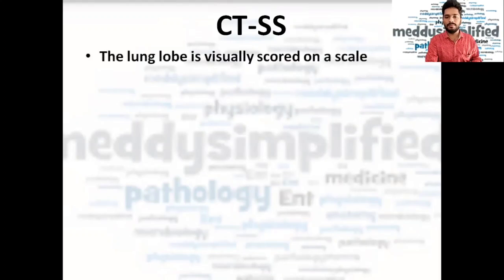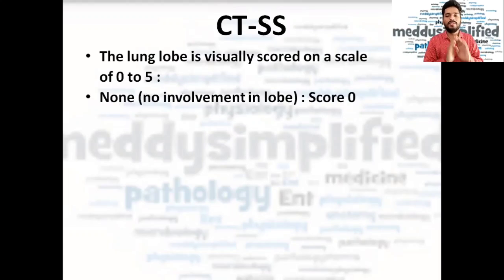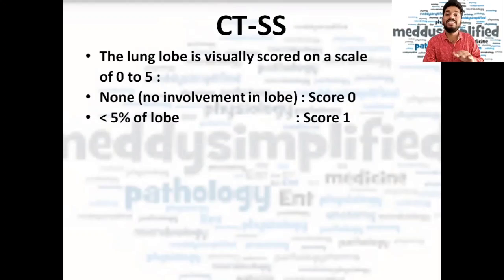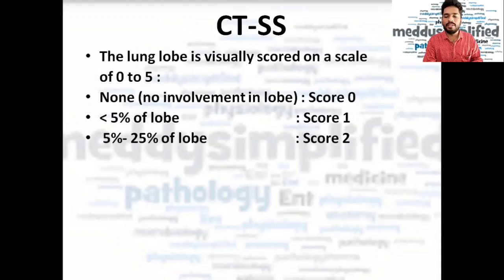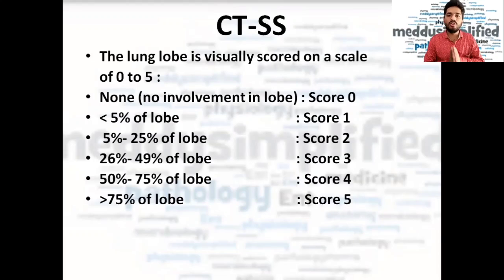Now, talking about the CT severity score: after doing the CT scan, we visualize each lung lobe and score it from zero to five. If there is no involvement in the lobe, we score it zero. If the lobe is involved less than five percent, we give it score one. Five to twenty-five percent involvement is score two. Twenty-six to forty-nine percent is score three. Fifty to seventy-five percent is score four, and more than seventy-five percent is score five.